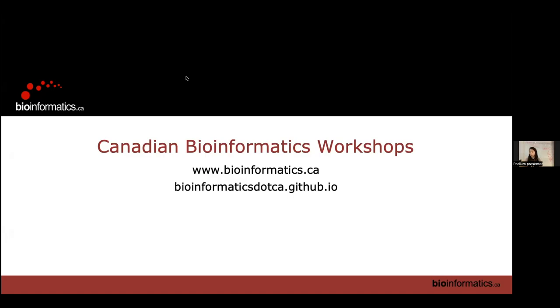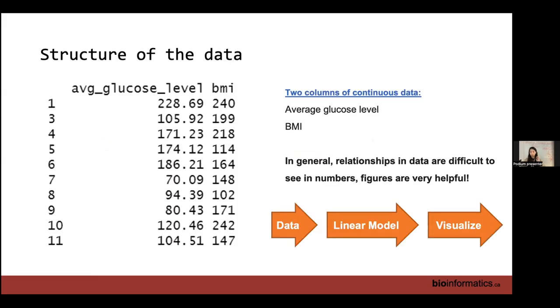So I have a quick presentation talking about linear models in case people aren't as familiar about this. We're looking at these two columns in our data. We have two columns of continuous data, meaning that we have a bunch of numbers of very wide range, average glucose and BMI.